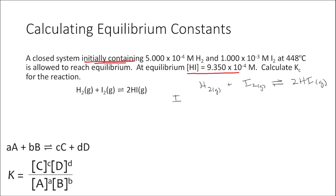ICE stands for Initial, Change, and Equilibrium concentrations. I'll fill in what I know: initially I have 5×10⁻⁴ M H2 and 1×10⁻³ M I2. These are the only two species present initially, so the initial concentration of HI is zero. I don't know how these concentrations change yet, but I know that at equilibrium the concentration of HI is 9.35×10⁻⁴ M. Now I'll use the stoichiometry of the equation to calculate the changes in concentration.